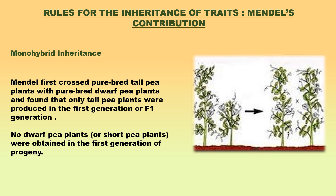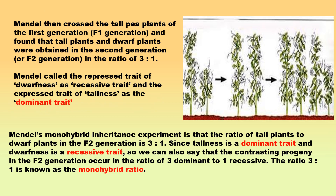From this Mendel concluded that the F1 cross showed the traits of only one of the parent plants — tallness. The trait of the other parent plant, dwarfness, did not show up in the progeny of the first generation. Mendel then crossed the tall pea plants of the F1 generation and found that tall plants and dwarf plants were obtained in the second generation or F2 generation in the ratio of 3:1. Mendel noted that the dwarf trait which had seemingly disappeared in the first generation reappeared in the second generation. Mendel said that the trait of dwarfness had not been lost; it was merely concealed or suppressed in the first generation to re-emerge in the second generation.